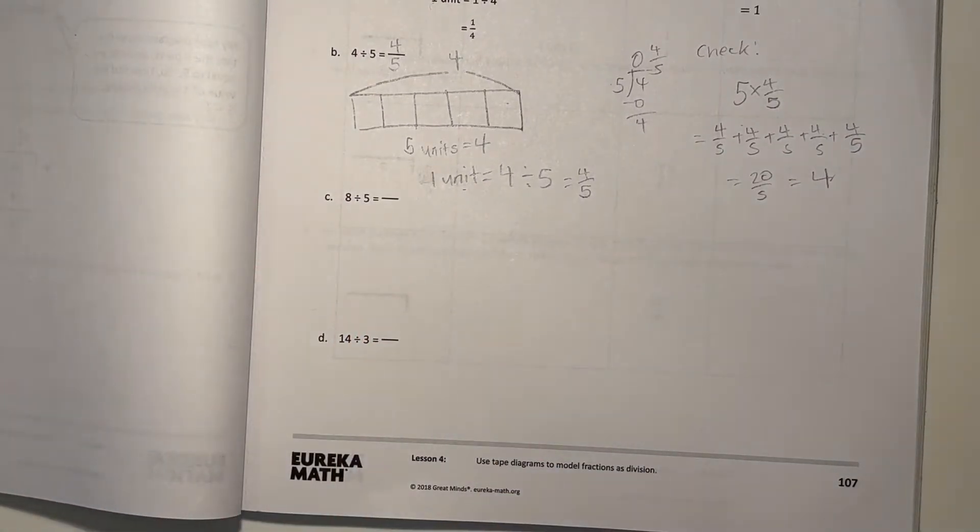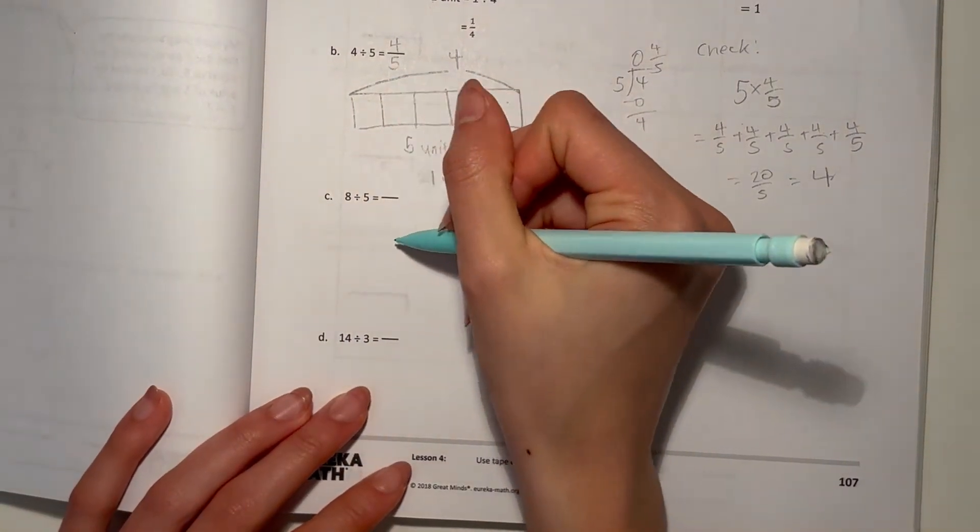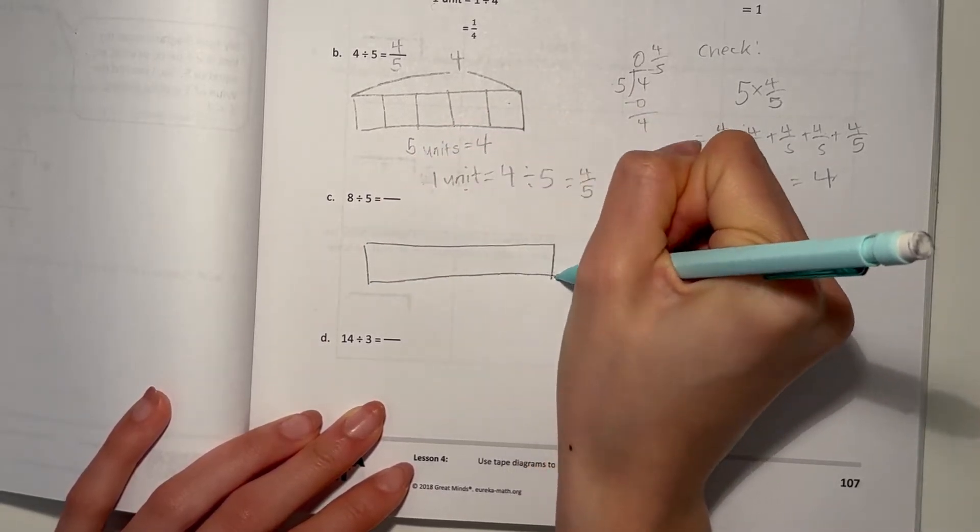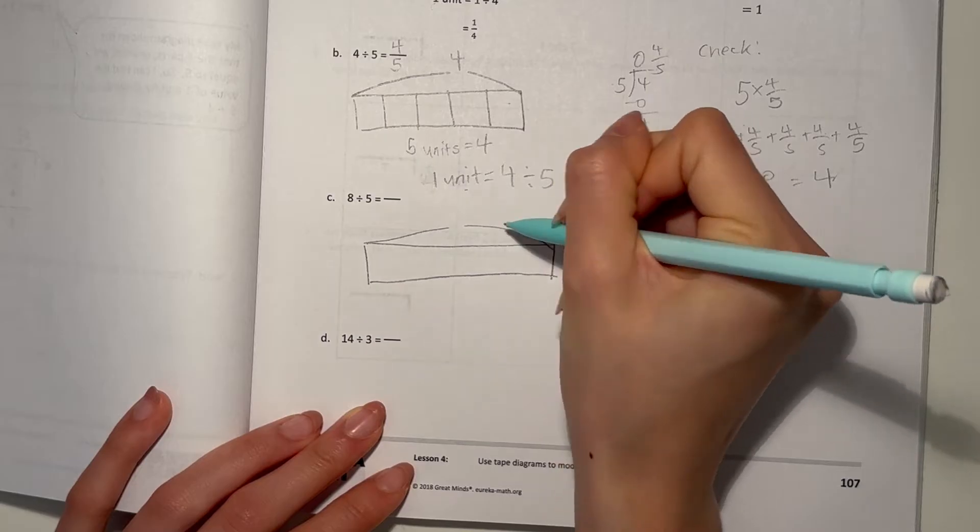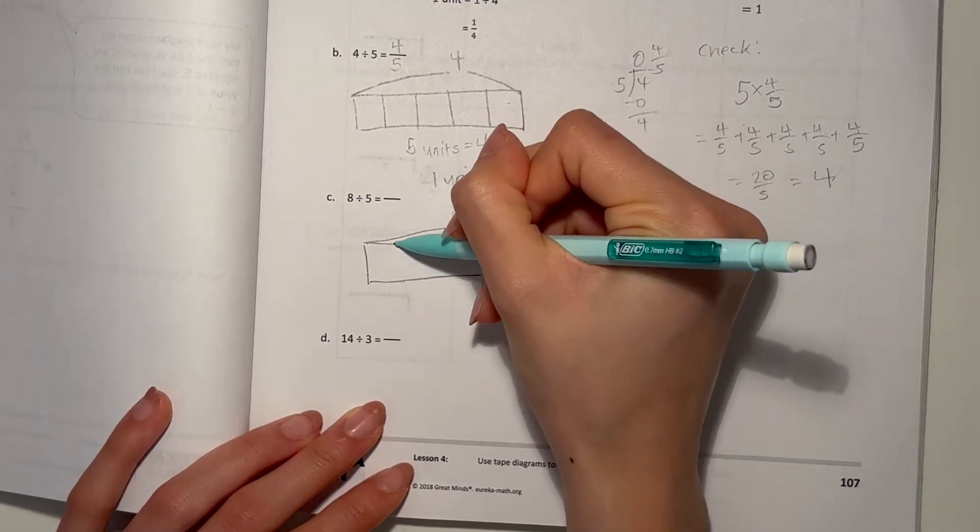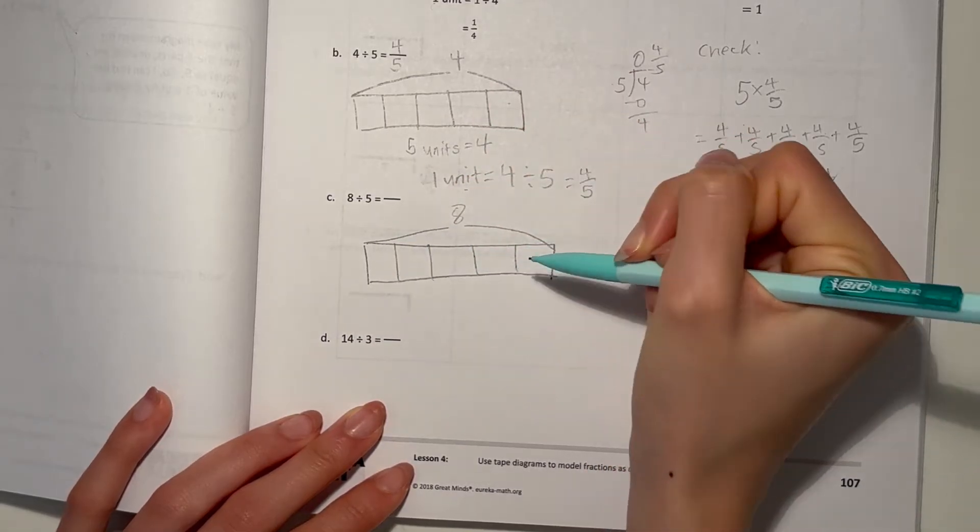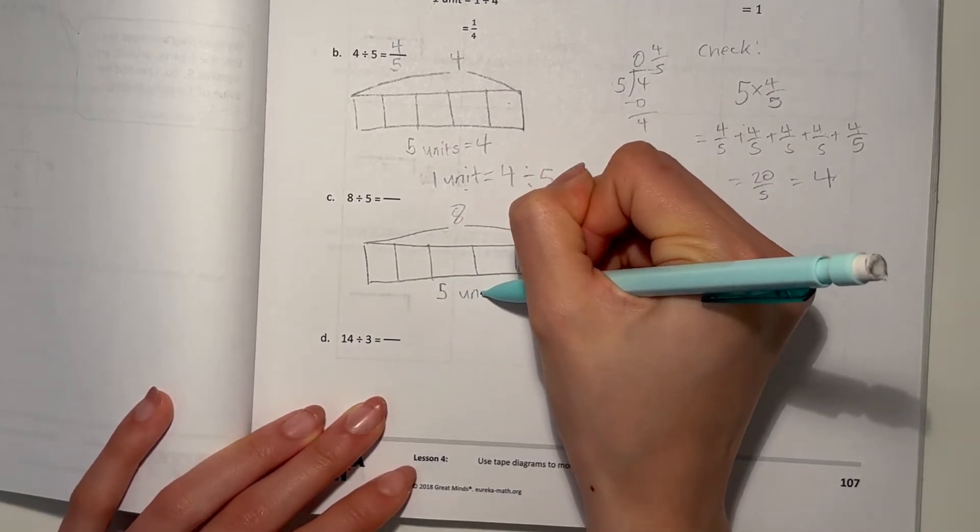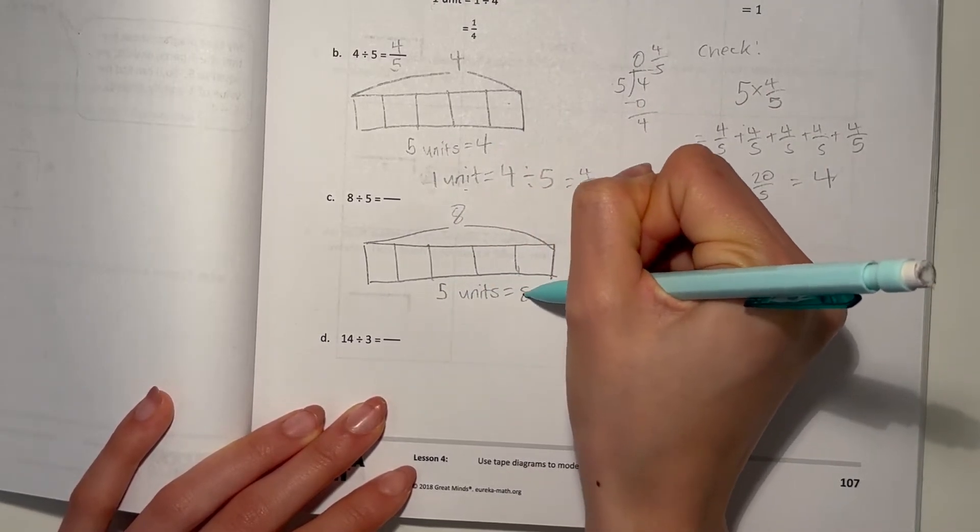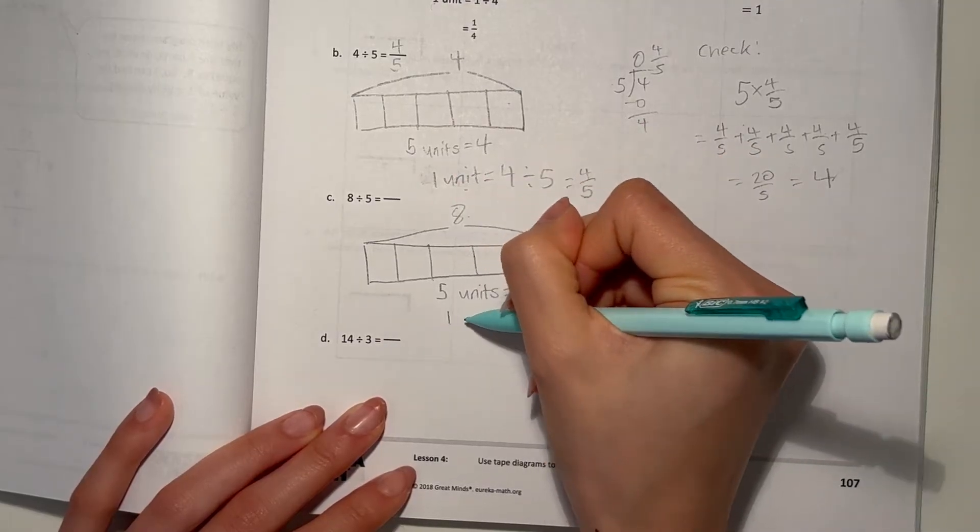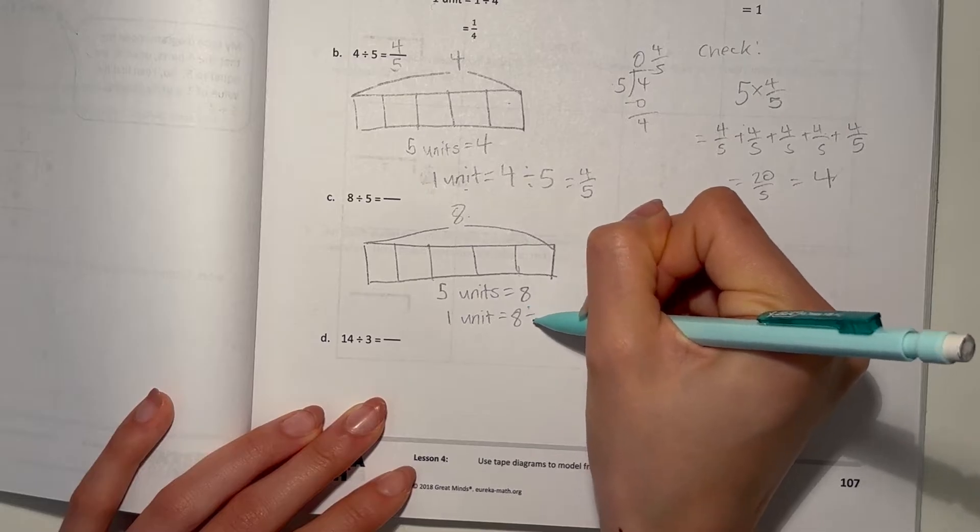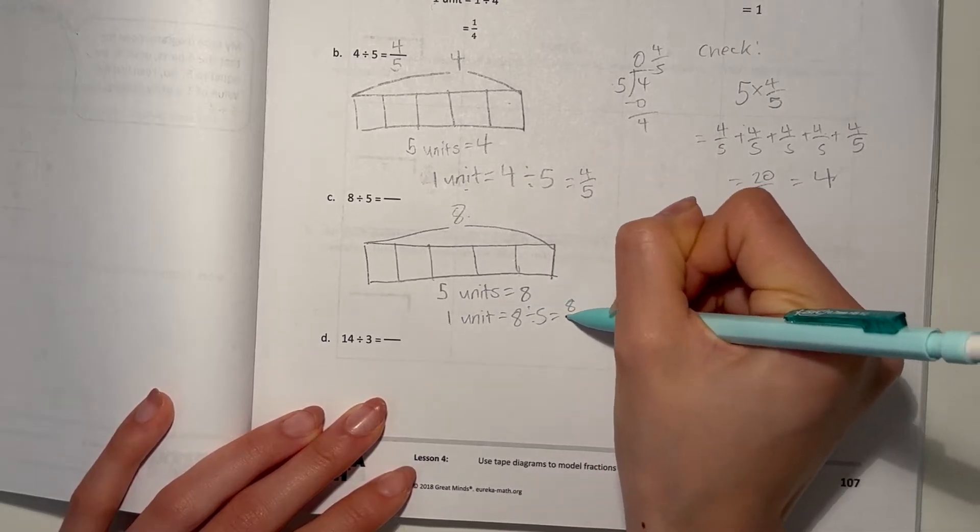C, 8 divided by 5. So that means our whole is 8. And we're going to divide it into 5 pieces. So 5 units is equal to 8, because 8 is our whole. Then 1 unit is 8 divided by 5, which is 8 over 5.